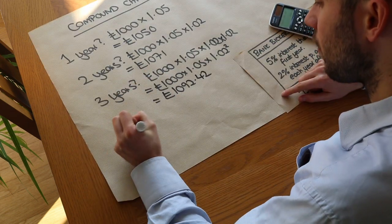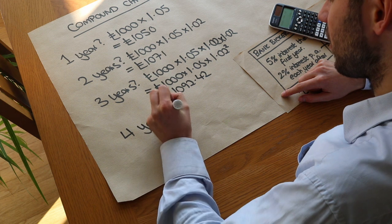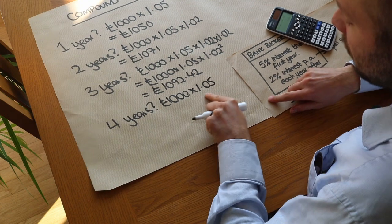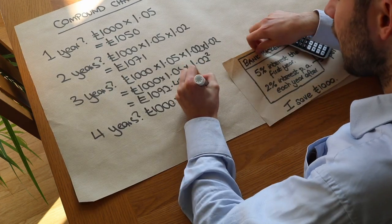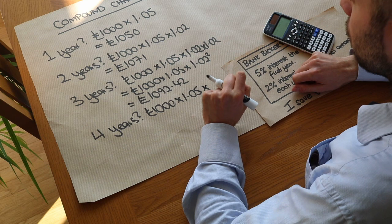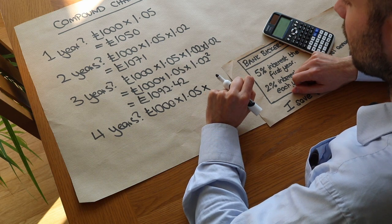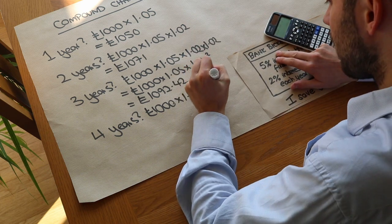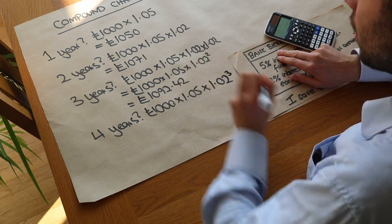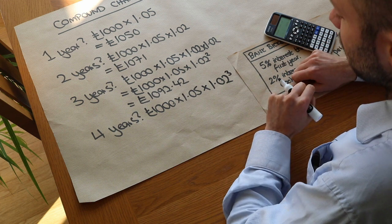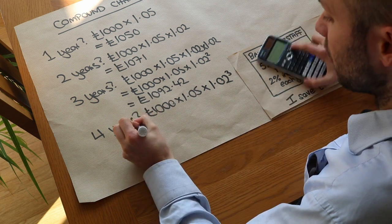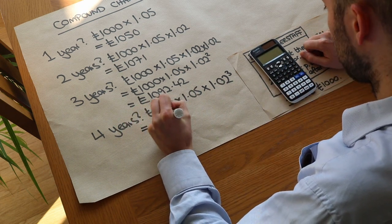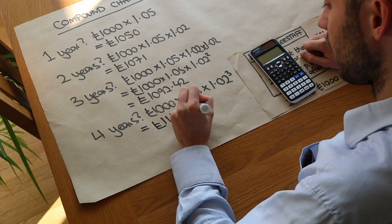What about after four years? We start with a thousand, times by 1.05 for the 5% increase in year one, then for years two, three, and four we multiply by 1.02 three times — which we can write as times 1.02 cubed. That gives one thousand, one hundred and fourteen pounds and twenty-seven pence to the nearest pence.